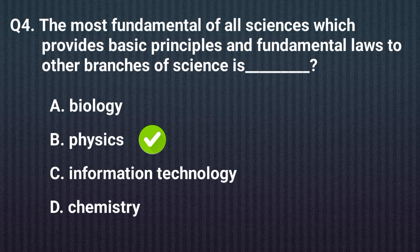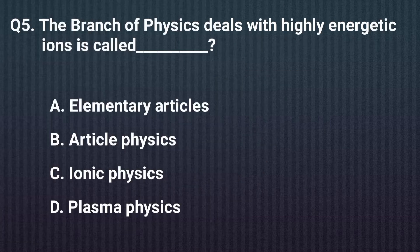Question five. The branch of physics which deals with highly energetic ions is called — the right answer is option D: Plasma Physics.